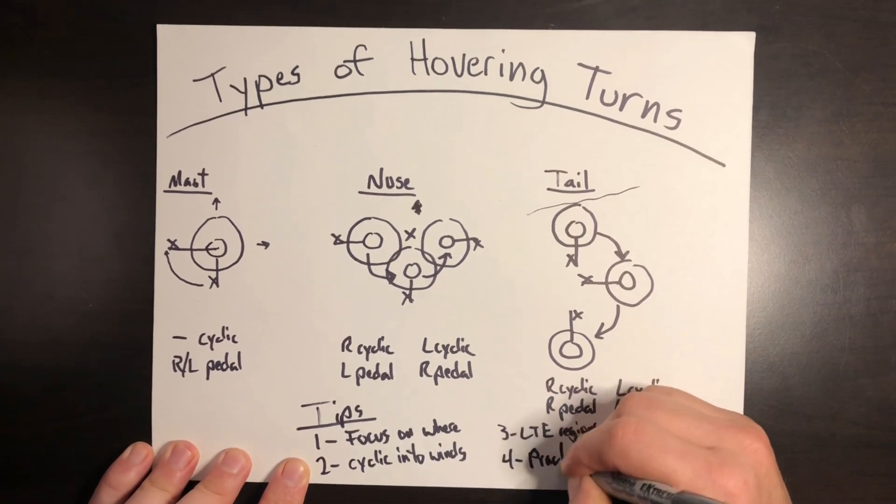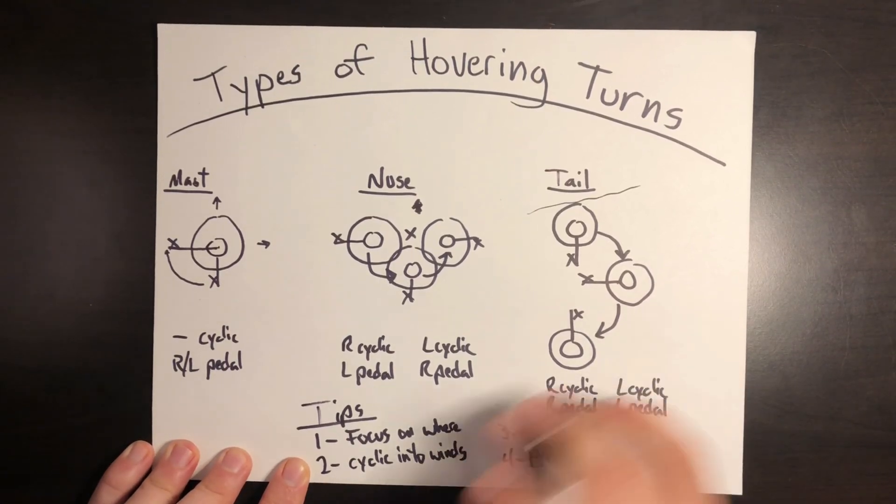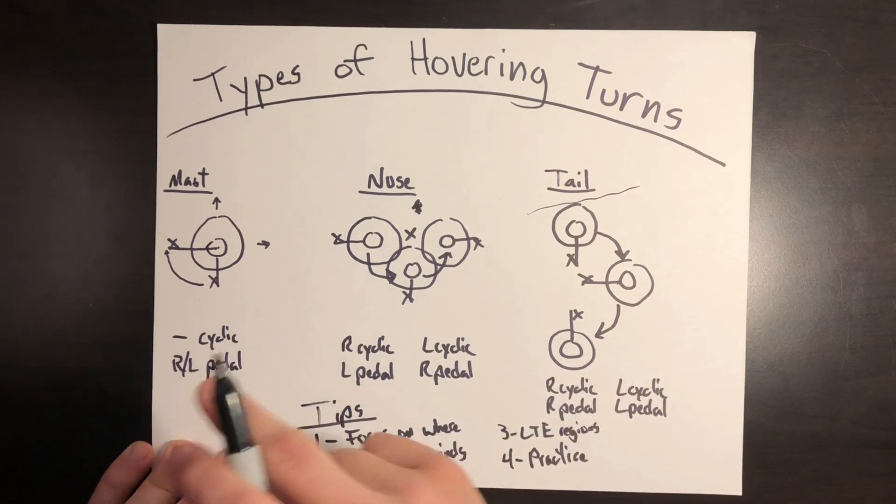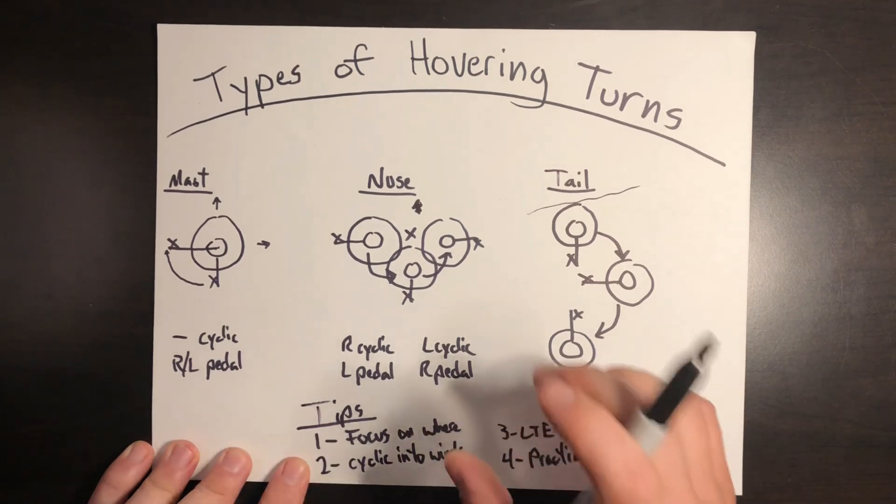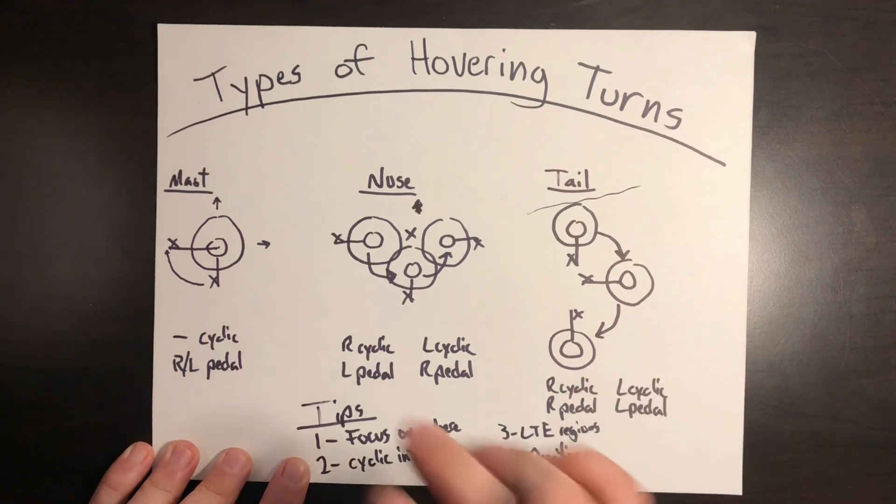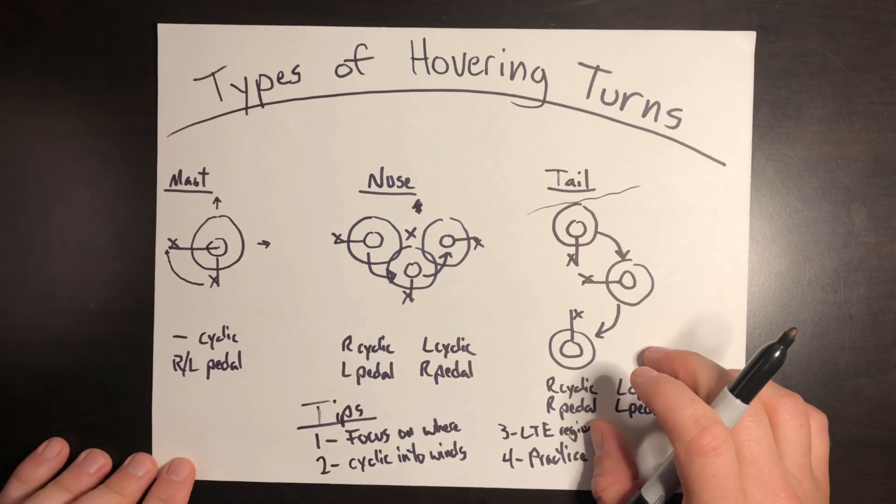Fourth is practice these maneuvers, preferably in an open field before you ever try to get to any kind of confined area. So if you notice when you're practicing that you have excessive drift in all of these maneuvers, you probably need to clean these up before you start getting into a tighter area with multiple obstacles around that you could risk hitting. So practice, practice, practice, get used to these maneuvers, and then you could go try them in other positions.